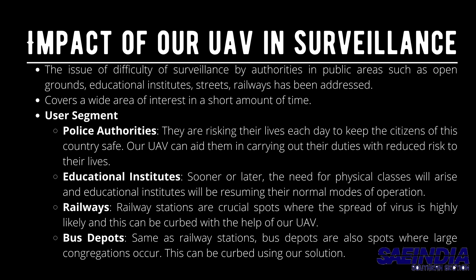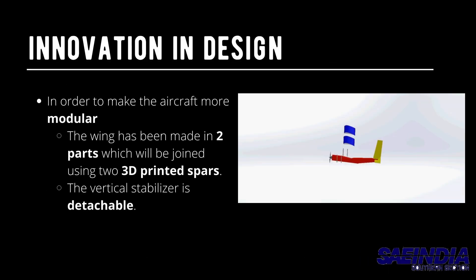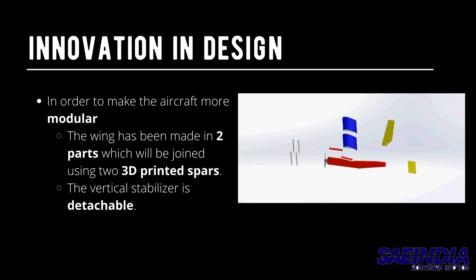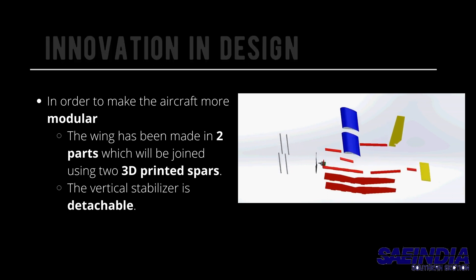The impact of our UAV in terms of surveillance is fourfold: it can help police authorities, educational institutions, railways, and even bus depots, because these are the sectors where there are higher probabilities of congregations.